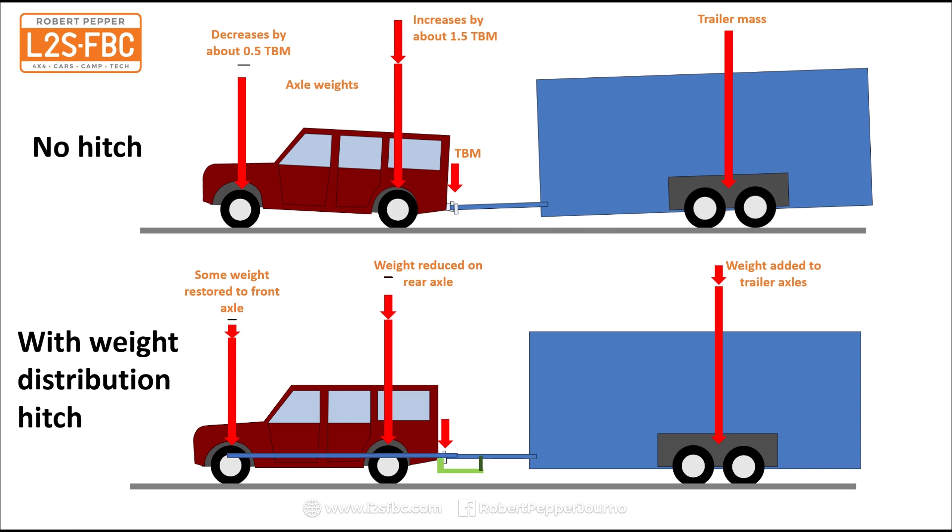You can conceptually think of a weight distribution hitch as if the drawbar didn't really hinge but it went all the way through to the front axle. That's kind of a reasonably good conceptual way to think about it.